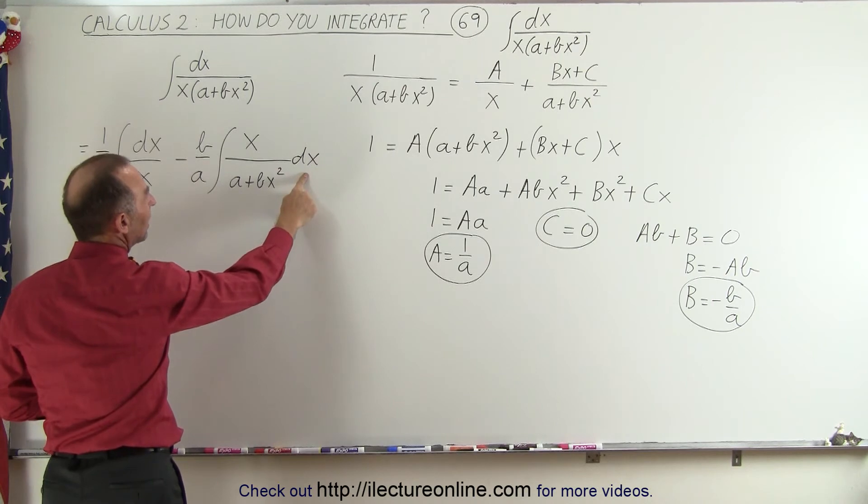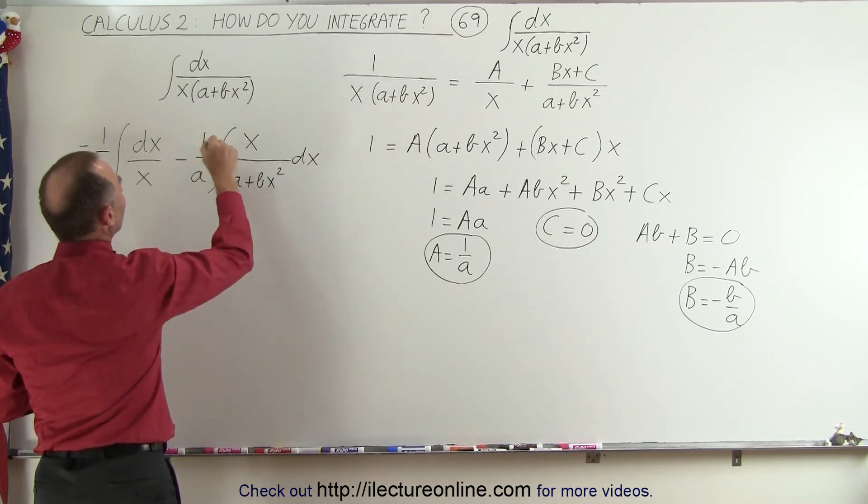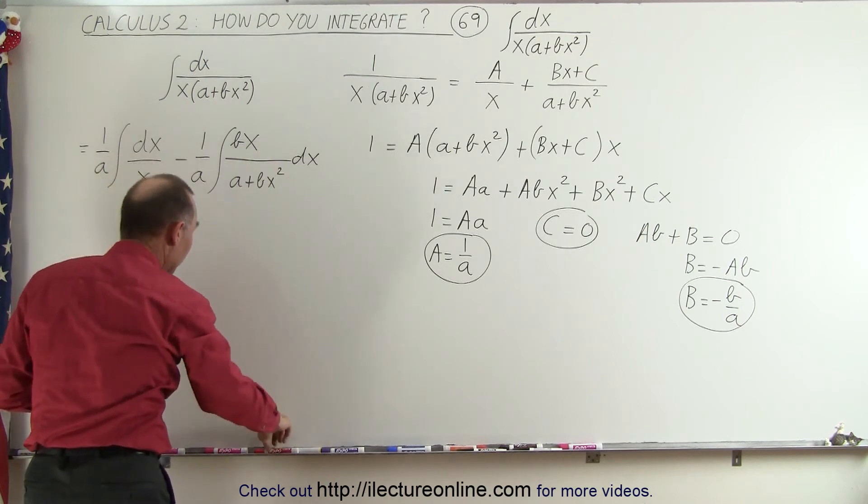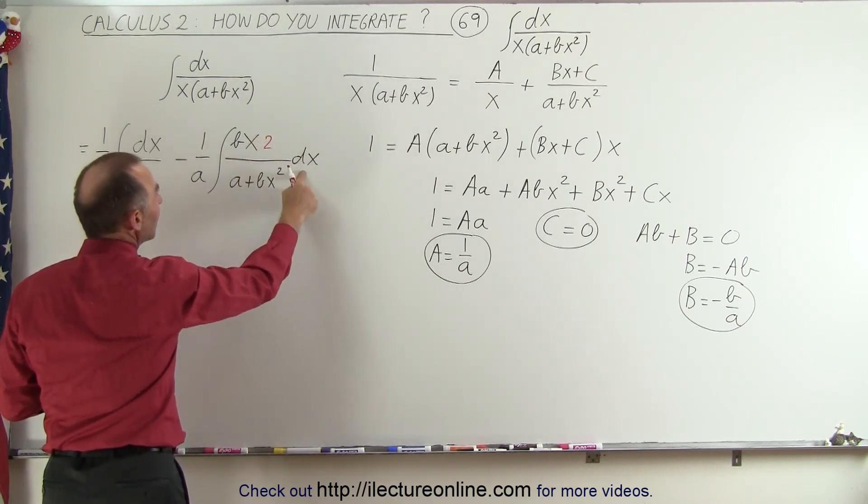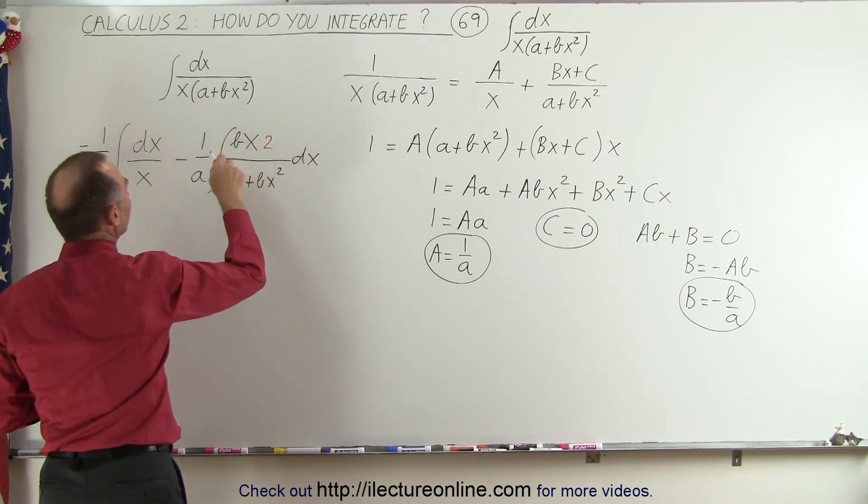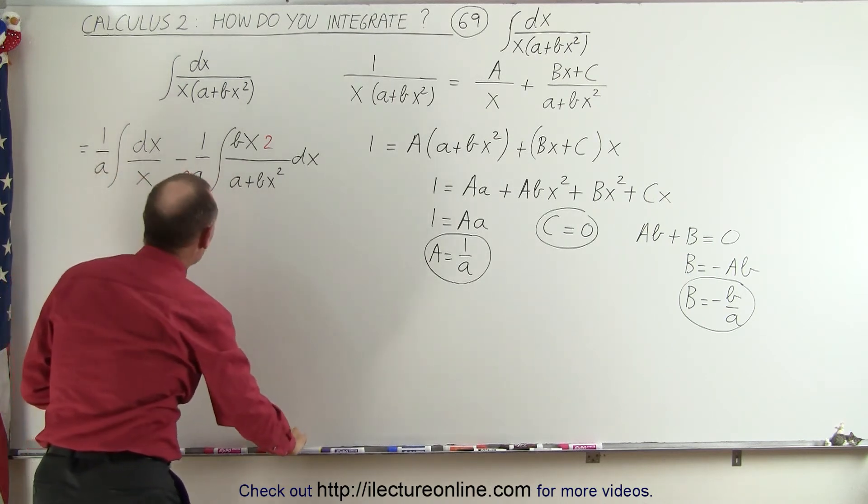what we need here is we have an a plus bx squared in the denominator and an x dx in the numerator. We really need a 2bx dx. We already have a b here, so I can take this b and move it inside the integral sign, but we also need a 2 in the numerator. So now we have a 2bx dx, which is the proper differential of the denominator. Of course, when I multiply the numerator by 2, I have to multiply the denominator by 2 as well.